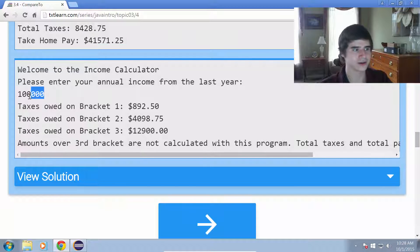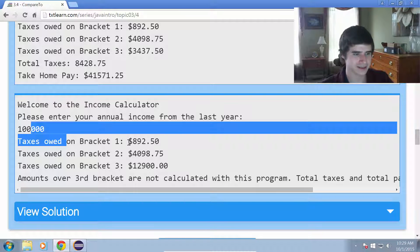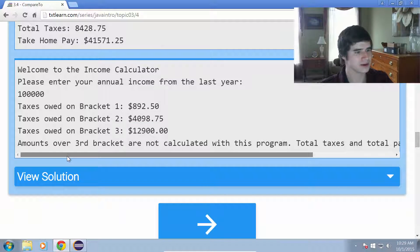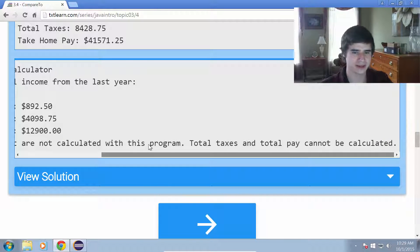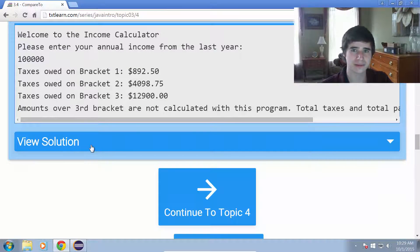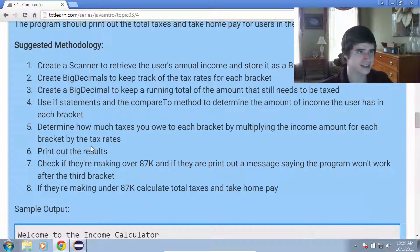And if they enter an amount over the third bracket, so we're getting into the fourth bracket now, I don't need you to go on. You can make more brackets if you want to, but this program in this example doesn't calculate beyond the third bracket. So if we put in $100,000, it calculates the amount owed on the first three brackets. And then it just prints out a message that says, amounts over third bracket are not calculated with this program. Total taxes and take-home pay could not be calculated. Alright, and the solution is available on the website as well, so take a look at that if you have any problems. Thanks for watching, and have a good one.